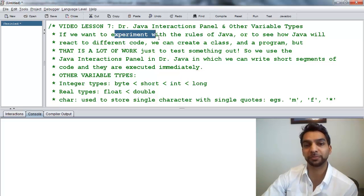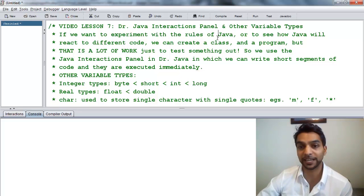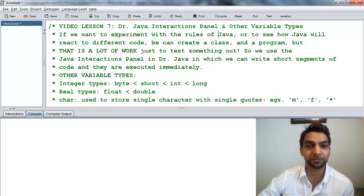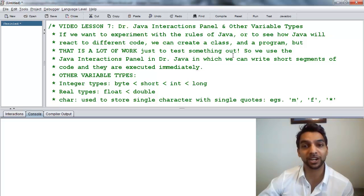Sometimes we want to experiment with the rules of Java. We want to see what's allowed, what's not allowed, what's going to give us a syntax error, what kind of syntax error we're going to get. If we want to experiment around, we can create a class and create a big long program with the class, open the brace, close brace, public static void main, and all that stuff. But that's a lot of work just to test something out. So that's why we really like the Dr. Java IDE because it offers this interaction panel.